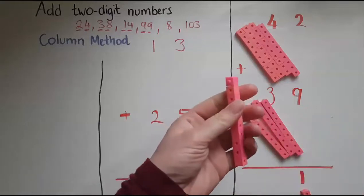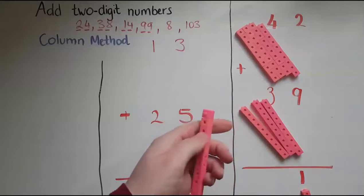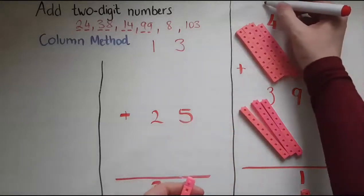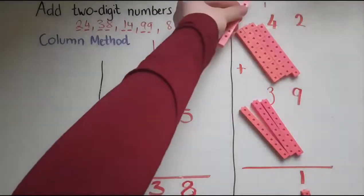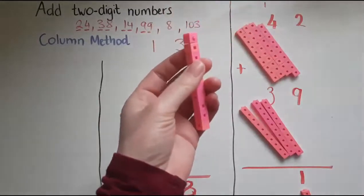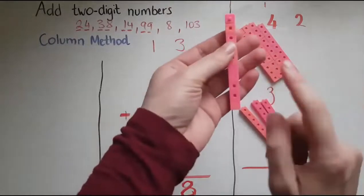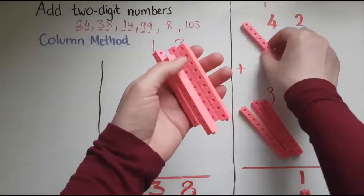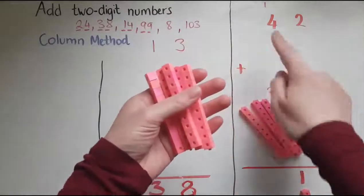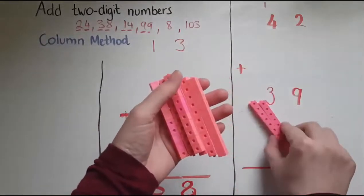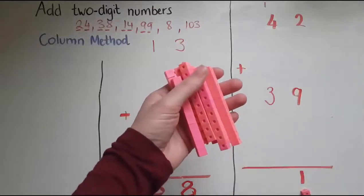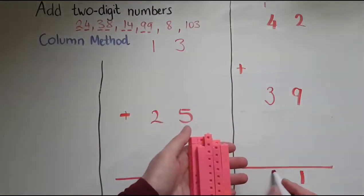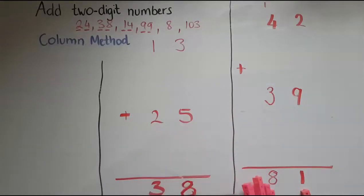So I will put a 1 here for the units. Now I've got a spare, or an extra one, a leftover one, which I like to write here at the top. So that is represented by this. So let me count. I've got 1, 2, 3, 4, 5. The 4 and the 1, 5, 6, 7, 8. So this is represented by the 8 here. So all together, 42 and 39 makes 81.